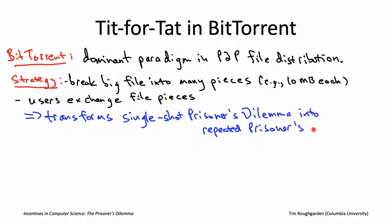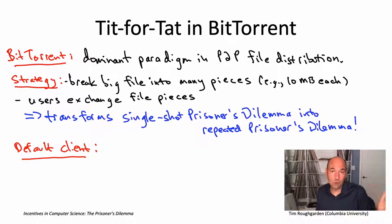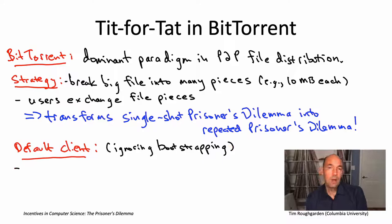That's the design decision that gives a file transfer in BitTorrent a repeated prisoner's dilemma-like character. To tell you how tit-for-tat shows up, let me tell you a little about the reference client. You can write your own BitTorrent client if you want, but if you download the standard one, this is how it works. There is a bootstrapping process which I'm not going to explain here, but it is covered in the lecture notes. Instead, I want you to think about fast-forwarding to midway through the process of a bunch of different peers exchanging pieces of one big file.